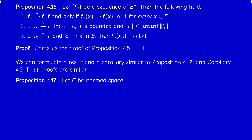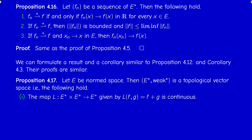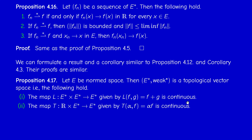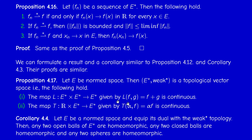We can also state that E* with the weak-star topology is a topological vector space, meaning that addition and scalar multiplication are continuous — try to adapt the proof of Proposition 4.12. Similarly, in E* with the weak-star topology, any two open balls are homeomorphic, any two closed balls are homeomorphic, and any two spheres are homeomorphic.